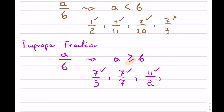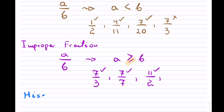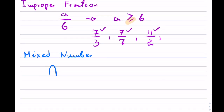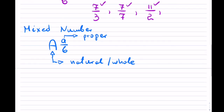Now finally, the last item is a mixed number. For mixed numbers, it is a combination of two numbers — you have a natural number or a whole number in front, combined with a proper fraction. For instance, 1 and 3 quarters would be a mixed number. It's composed of a whole component and a proper fraction.